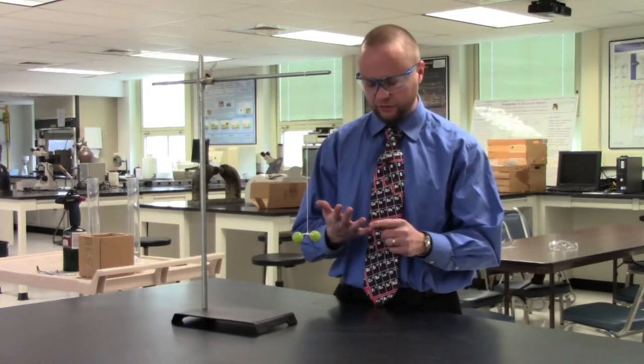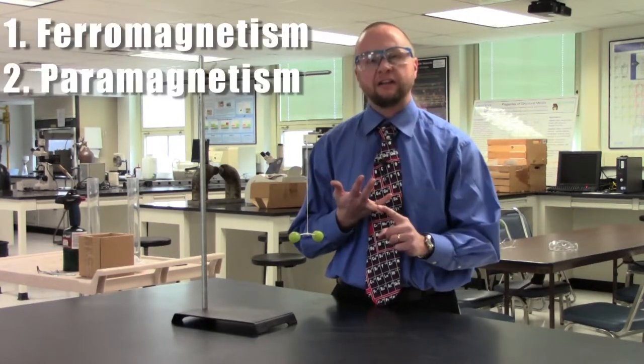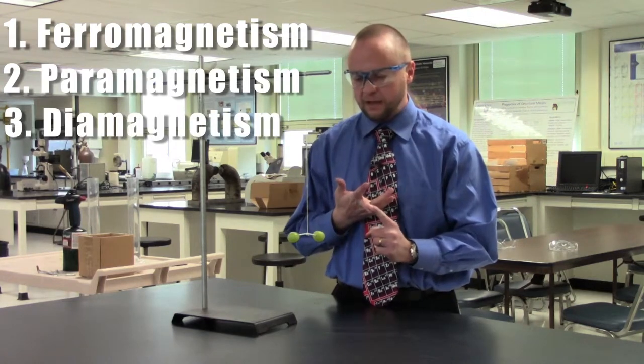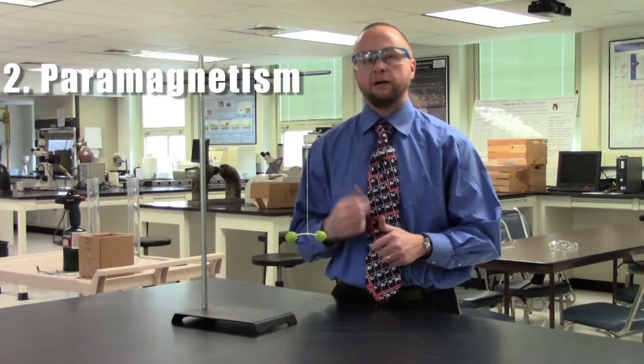So you will learn in this lesson that there are three main categories of magnetism that we're interested in: ferromagnetism, paramagnetism, and diamagnetism. And so these grapes are going to exhibit paramagnetism.